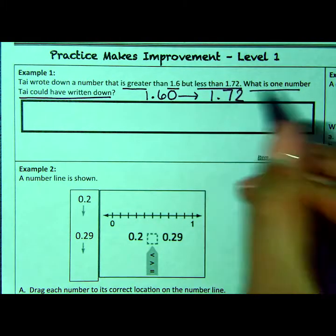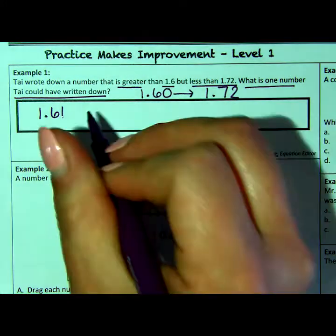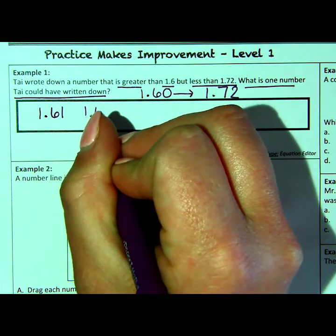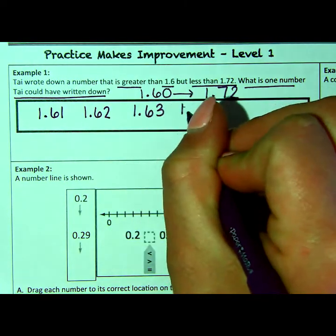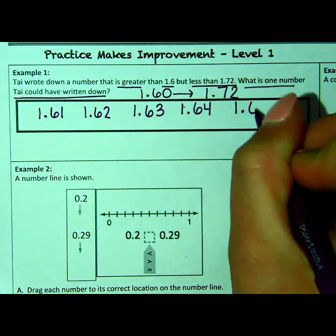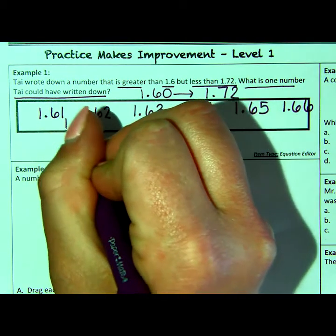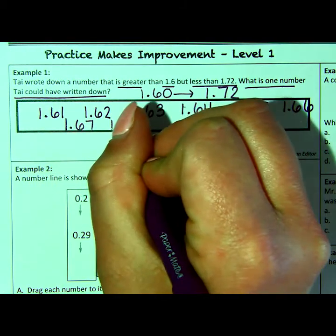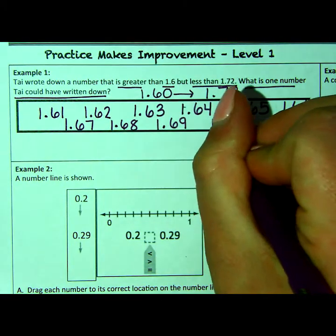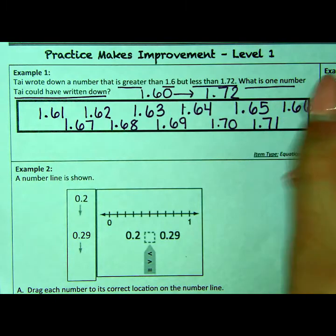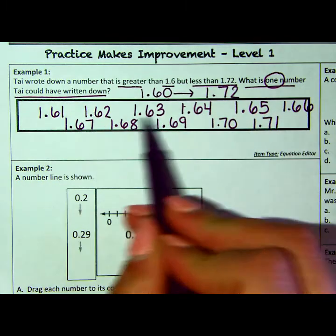So $1.72. The numbers that he could have written down could have been 1.61, 1.62, 1.63, 1.64, 1.65, 1.66, 1.67, 1.68, 1.69, 1.70, or 1.71. I know that it says to write one number, but just so you guys are aware, if your answer is correct, it could have been any of those numbers.